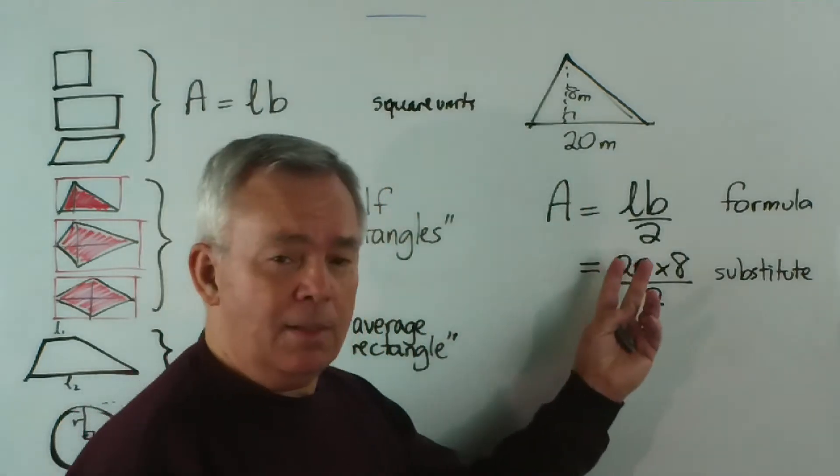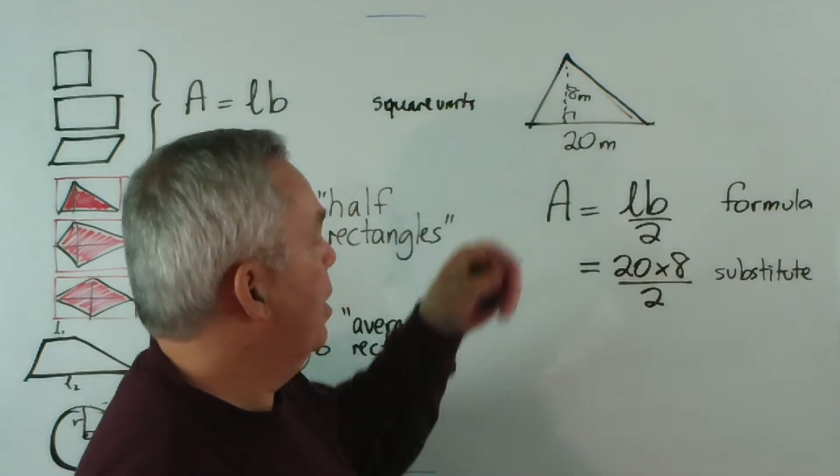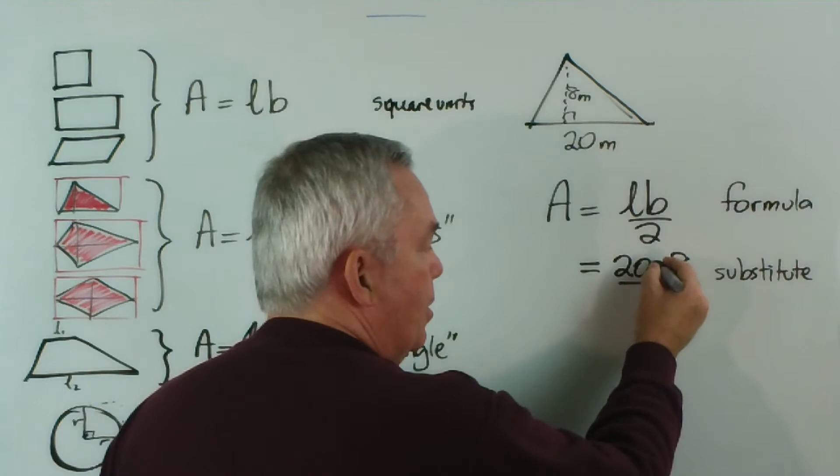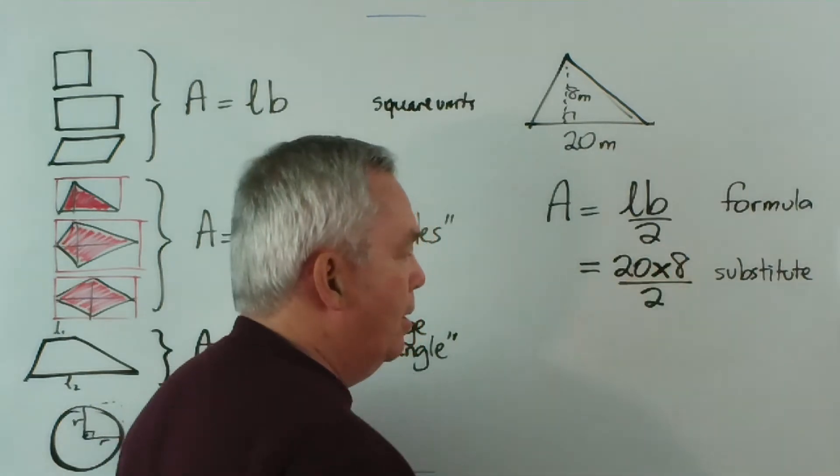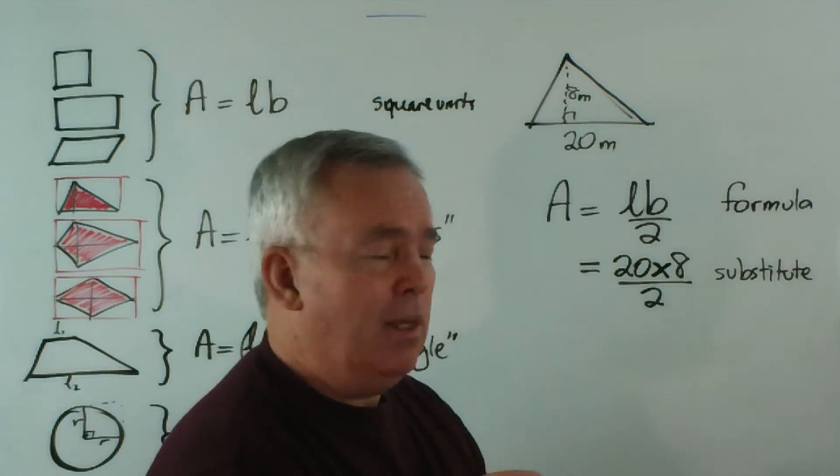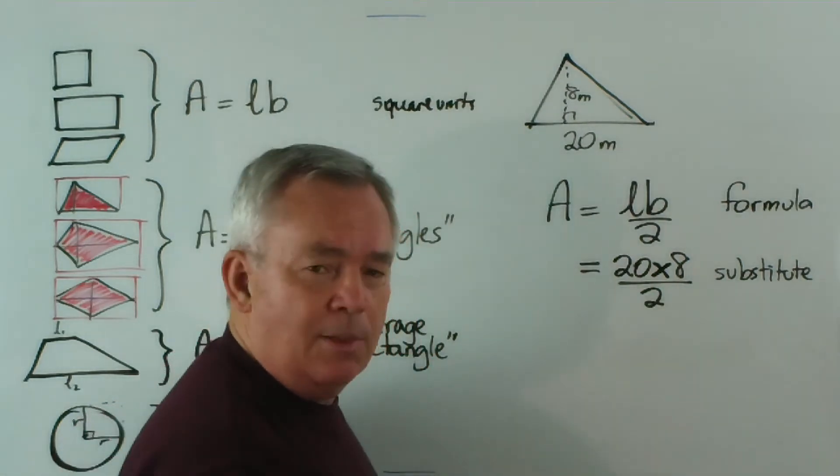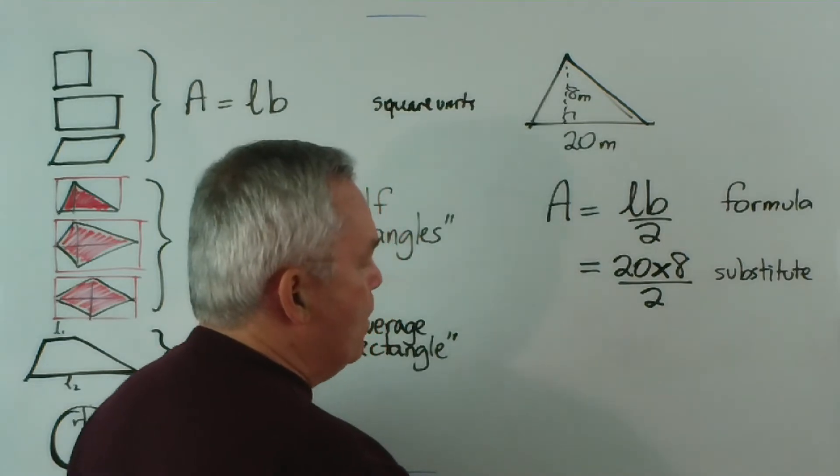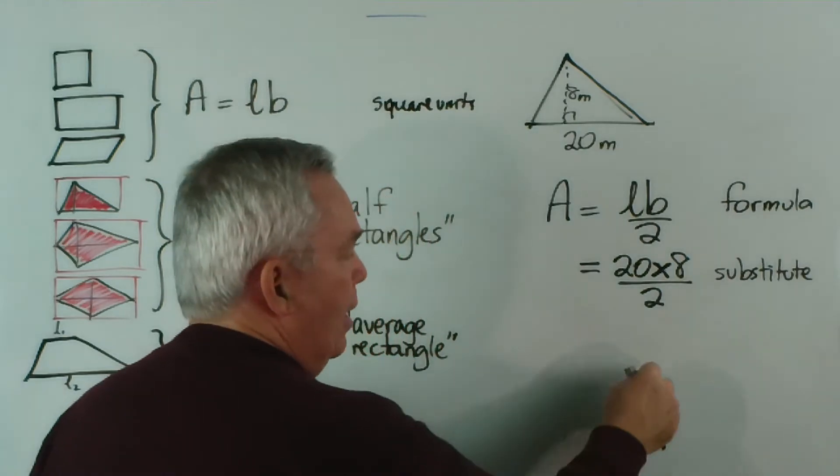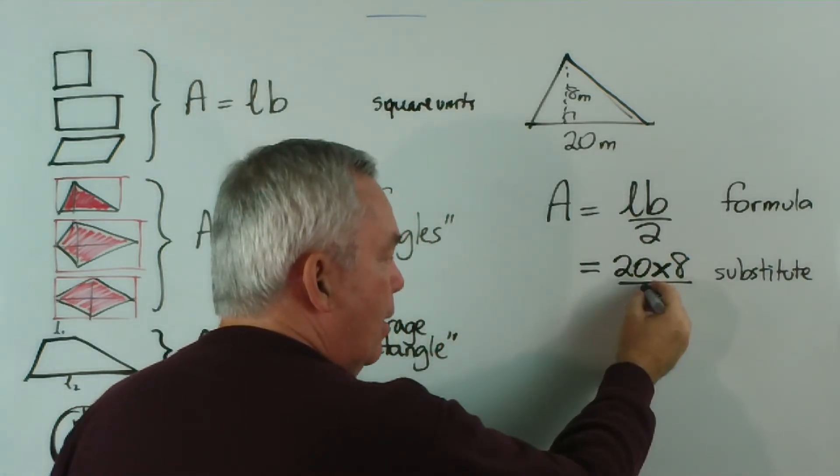Now, does it matter whether we write 8 times 20 or 20 times 8? Does the order cause any problems? Well, it doesn't, because multiplication is what we call commutative, and that means the order in which we multiply makes no difference to the answer we get. 20 times 8 and 8 times 20 give the same result. So that's nice... we don't have to worry that we've got it right, that we've got the order correct.